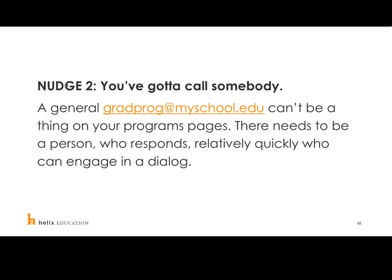The second nudge: you've got to be able to call somebody. So many institutions considering a growth strategy may have existing programs in place, but when you go to those program pages, you see to contact someone via some generic email address. In today's attention marketplace, for the kind of response you need for someone who's ready to go to school, a generic gradprogramatmyschool.edu is not going to cut it. That second nudge means for each program making sure there's someone on top of inquiries who can respond quickly, engage in dialogue, and move people through.